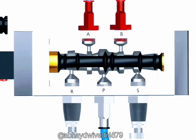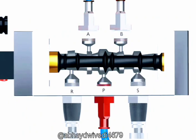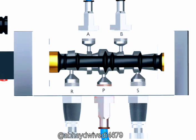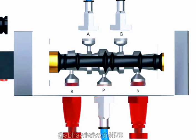The ports A and B are connected to the cylinder. Port P is connected to the compressed air supply unit. Ports R and S are exhaust ports, to which the pneumatic mufflers are attached.